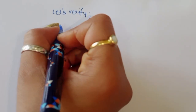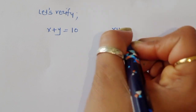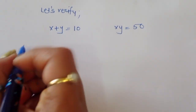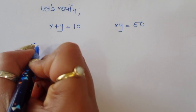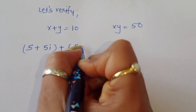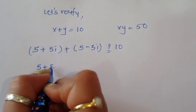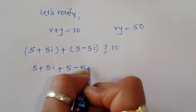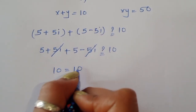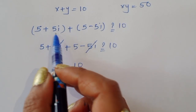Verifying equation 1: x plus y equals 10. For x1 and y1: (5 plus 5i) plus (5 minus 5i) equals 10. The 5i terms cancel, and 5 plus 5 equals 10. So LHS equals RHS — this is correct.